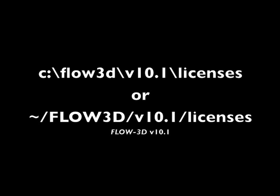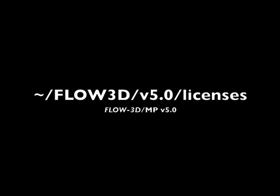The FlowScience License Administrator provides the license file. The license file should be placed in the licenses subdirectory of the Flow3D installation. By default, these locations are as follows: for Flow3D version 10.1, for Flow3D Cast version 3.5, and for Flow3D MP. The license file can be opened using a text editor to ensure it is correct for the machine. The only line which can be edited without causing a failure is the first line of the file, which begins with the word 'server'.